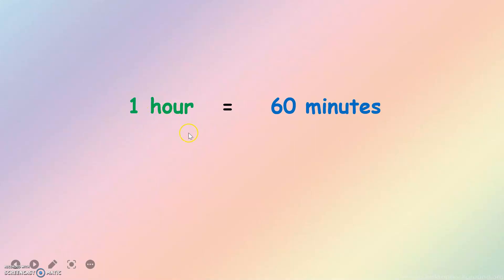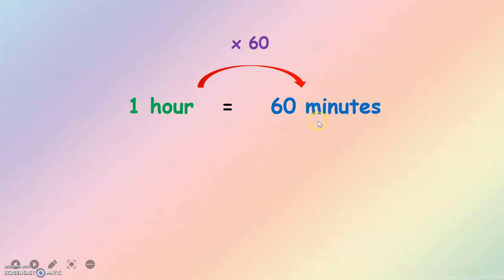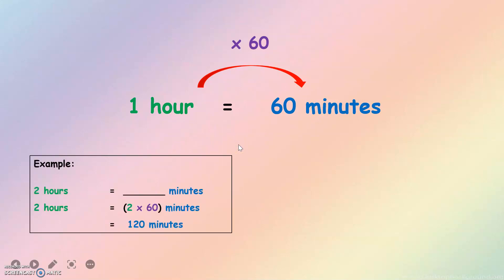1 hour equals to 60 minutes. If we want to convert hours to minutes, we should multiply by 60. You should remember this formula to convert hours to minutes.